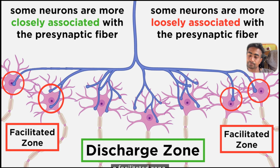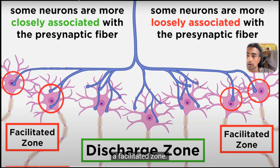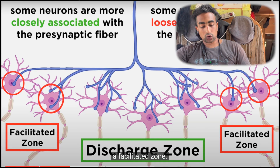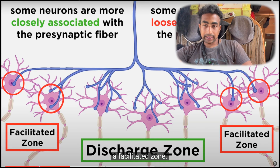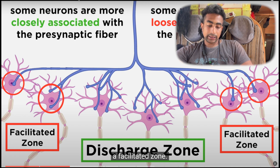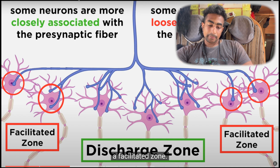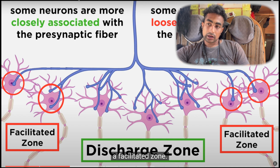Moving outwards, we see other neurons with fewer points of contact, and these sit within a facilitated zone.